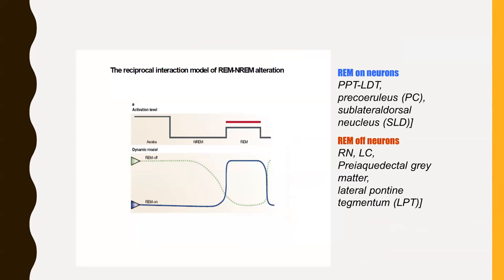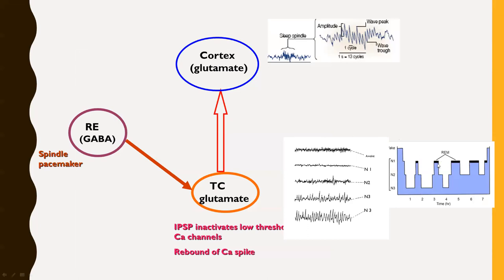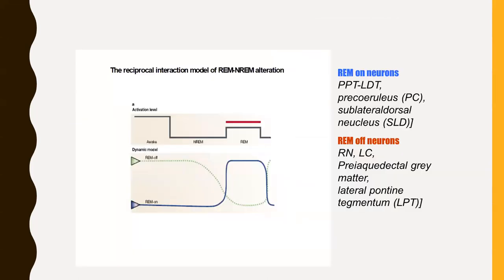Sleep is also ultradian in nature — meaning there is alternation not only between wake and sleep, but also between REM sleep and NREM sleep. Just as there is a circuit for initiating and maintaining wake and sleep, there is also a circuit which initiates REM sleep and which inhibits REM sleep. The nuclear groups that generate REM sleep are different from those associated with wake, except for PPT and LDT which are common to both. The nuclear groups that generate REM sleep are categorized into REM-on neurons and REM-off neurons.